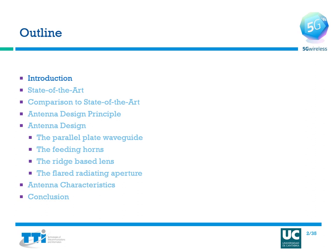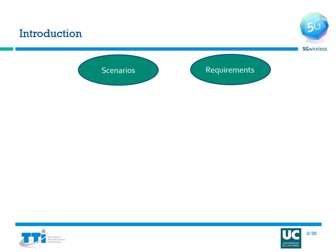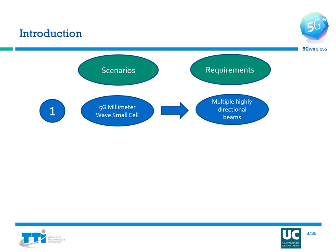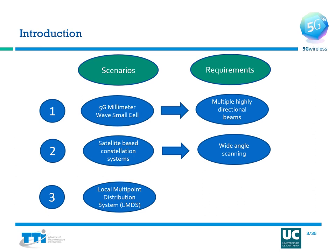Let's now move to the introduction and discuss the scenarios and requirements imposed on the antenna design. The first scenario is the case of a 5G millimeter wave small cell, which requires antennas with multiple highly directional beams. The next scenario is the satellite-based constellation system, which brings up the need for wide-angle scanning antennas. The third scenario is the local multipoint distribution system, which necessitates wide or dual-band operation at millimeter wave frequencies.